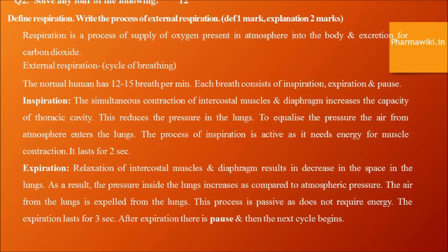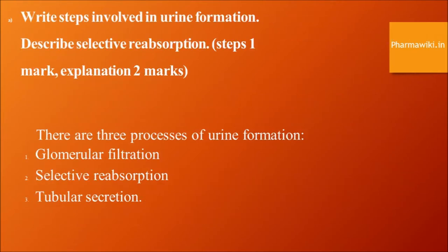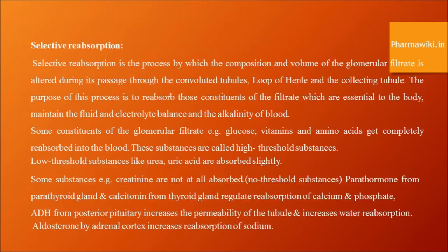The purpose of selective reabsorption is to reabsorb those constituents of the filtrate which are essential to the body, to maintain fluid and electrolyte balance, and also the alkalinity of the blood. Some constituents such as glucose, vitamins, and amino acids get completely reabsorbed — these are called high threshold substances. Low threshold substances like urea and uric acid are absorbed slightly. Some substances like creatinine are not absorbed at all — these are called no threshold substances.